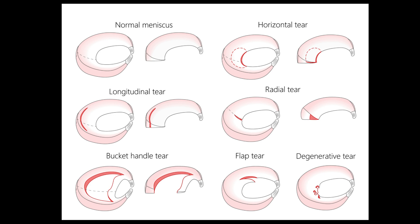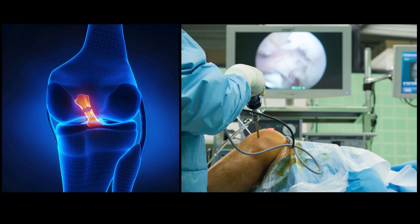Some types of meniscal tear generally need more urgent surgery — for example, if the meniscus is torn and flipped inside the knee, known as a bucket handle tear, preventing you from moving or fully straightening it. The location and type of tear are also important, as are other injuries that you have. For example, if you're due to have an ACL reconstruction, the surgeon will look at the meniscus at the same time. It's also important to know how long ago the injury was.